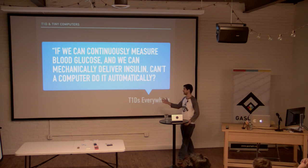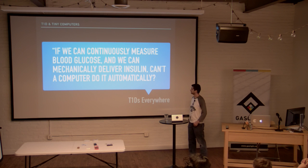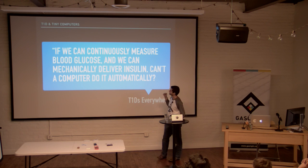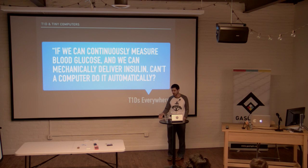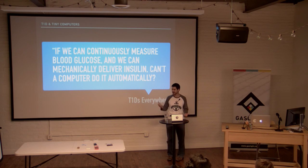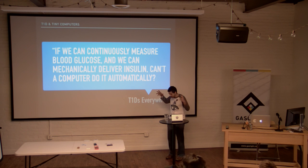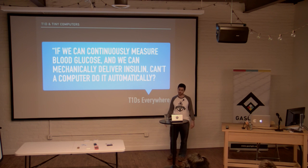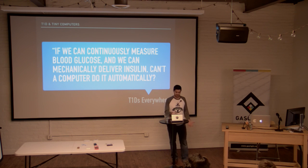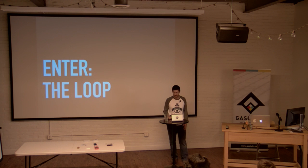The idea that people everywhere were asking: I have Type 1, I have this pump, I have this continuous glucose monitor — why can't I just put them together and close this loop so I don't have to keep manually delivering different values of insulin and can get my blood sugar into control better? And the answer to that is: the loop.